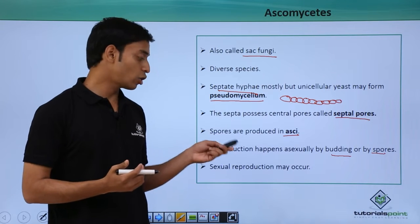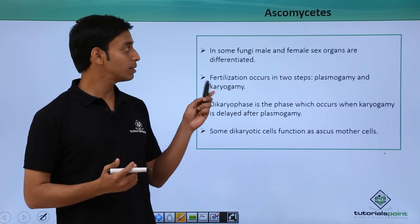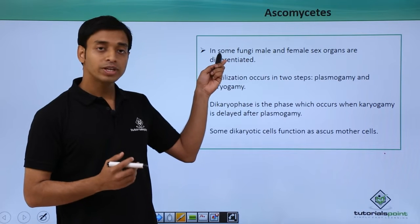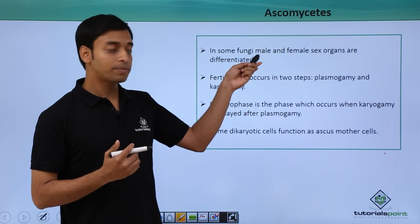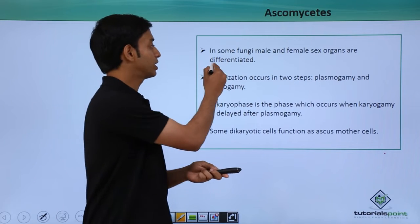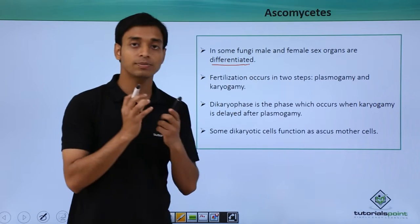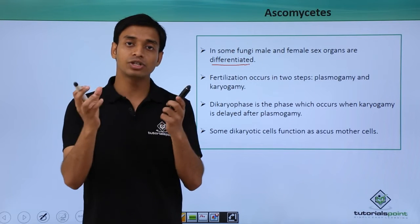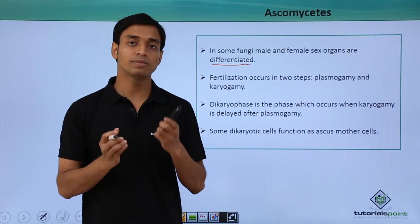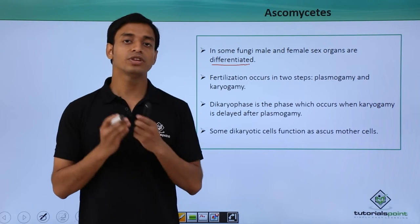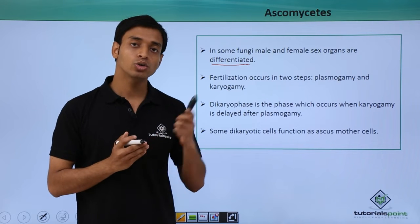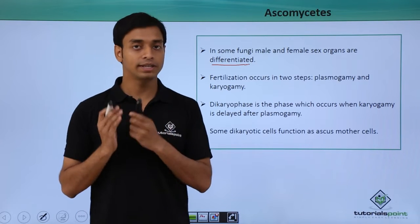Sexual reproduction is also seen in some ascomycetes. In some fungi the male and female sex organs are properly differentiated from each other. The male sex organ is termed the antheridium, whereas the female sex organ is termed the oogonium.